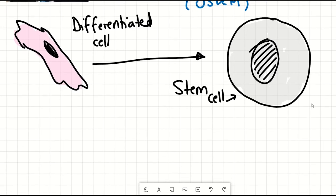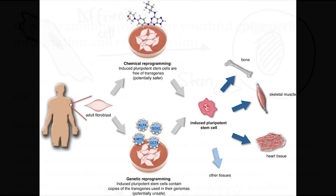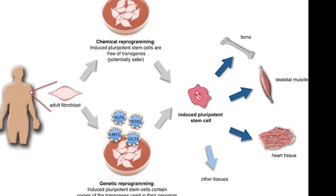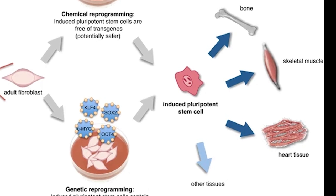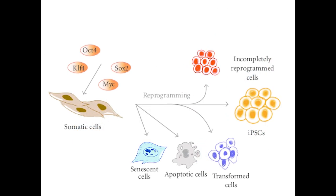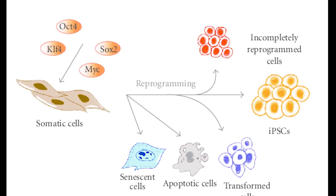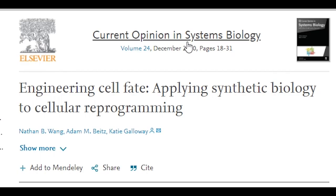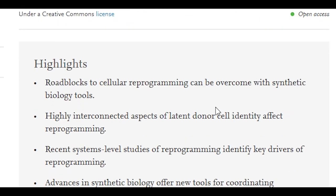These stem cells have the capability to replicate or differentiate into other cell types. They're not only useful for disease modeling of human cells that are hard to access, like neurons, but also have potential in regenerative medicine. But in reality, the bioengineering is not perfect yet here, and not all of the cells, given these factors, become induced pluripotent stem cells.